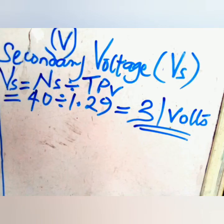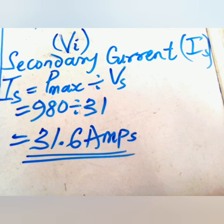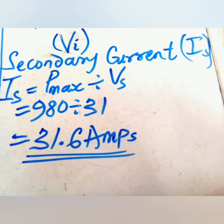Now we find our secondary voltage VS, obtained by the formula VS equals NS divided by TpV, giving us 31 volts. The next is secondary current IS — the maximum welding current — where IS equals P-max divided by VS, giving us 31.6 amps. What was loosed out from the secondary winding is three lengths of number 11 SWG twisted together, giving an amperage of about 30.69 times 3 — more than enough for the secondary winding.